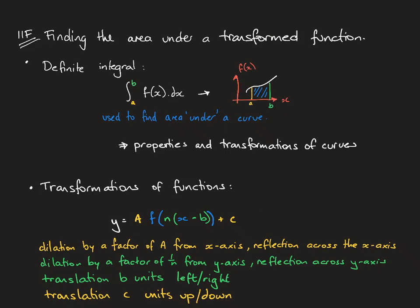In this second part of 11f, we're going to be looking at finding the area under a transformed function. Our definite integral is defined with f of x, and that finds the area between a and b, our two terminals. But what happens if we do some transformations to f of x?